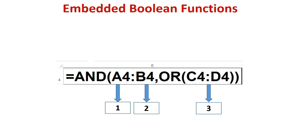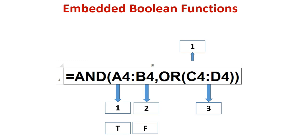The AND function here has three arguments. The first argument, A4, contains the value true. The second argument, B4, contains the value false. The third argument is the OR function. This OR function has two arguments.